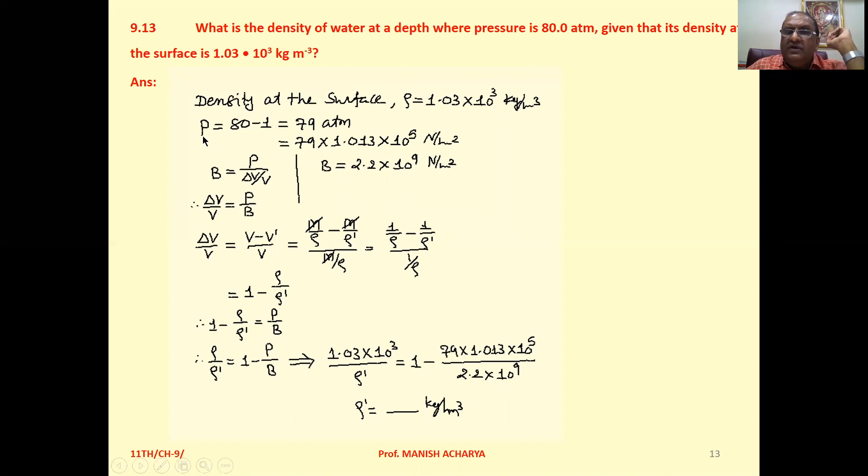So pressure of the water column exclusively is 80 minus 1, so that is 79 atm. That is 79 times 1.013 times 10 raised to 5 newtons per meter squared.